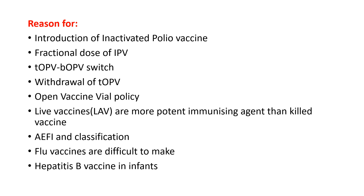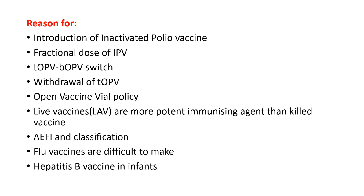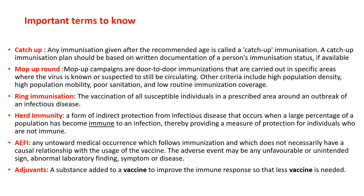You need to know the reasons behind certain statements: why the inactivated polio vaccine was introduced in the NIS, the reason for fractional dose of IPV, why the switch from trivalent OPV (tOPV) to bivalent OPV (bOPV) occurred, the reason for withdrawal of tOPV, the open vaccine vial policy and vaccines it applies to, why live vaccines are more potent than killed vaccines, adverse events following immunization (AEFI) and their classification, why flu vaccines are difficult to make, and the rationale for using hepatitis B vaccine in infants.